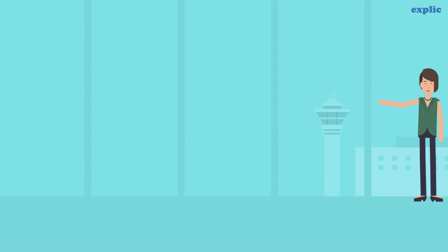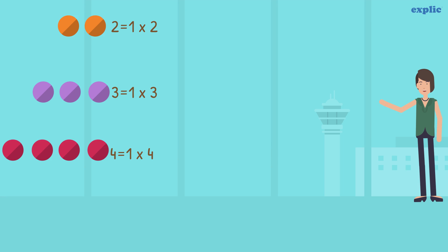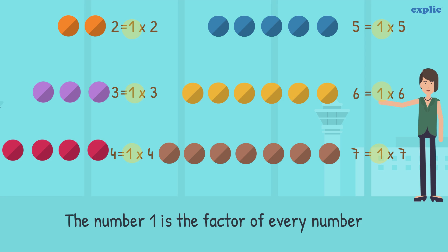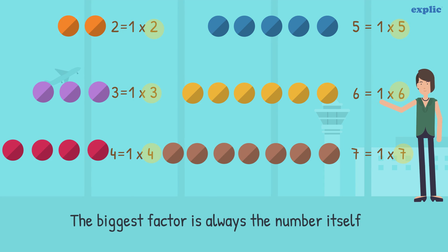As we already know, all numbers can be arranged in a line. That means a number can be written as a multiple of 1 and a number itself. Therefore, the number 1 is the factor of every number. Also, the biggest factor of a number is always the number itself.